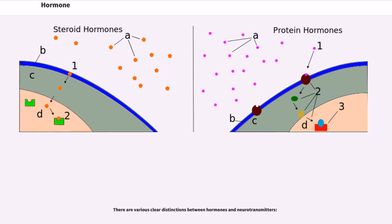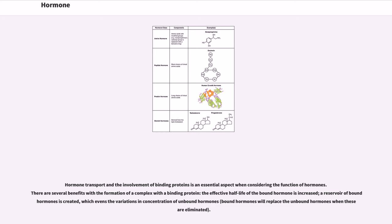There are various clear distinctions between hormones and neurotransmitters. Hormone transport and the involvement of binding proteins is an essential aspect when considering the function of hormones. There are several benefits with the formation of a complex with a binding protein. The effective half-life of the bound hormone is increased. A reservoir of bound hormones is created, which evens the variations in concentration of unbound hormones. Bound hormones will replace the unbound hormones when these are eliminated.